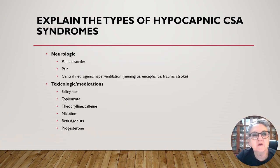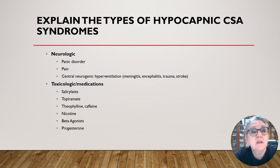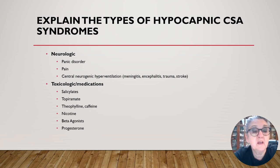Objective four: explain the types of hypocapnic central sleep apnea syndromes. The categories include neurologic — panic disorder, pain, or central neurogenic hyperventilation such as developed with meningitis, encephalitis, trauma, or stroke. Toxicology or medication types include psilocybin, topiramate, theophylline or caffeine, nicotine, beta agonists, and progesterone.